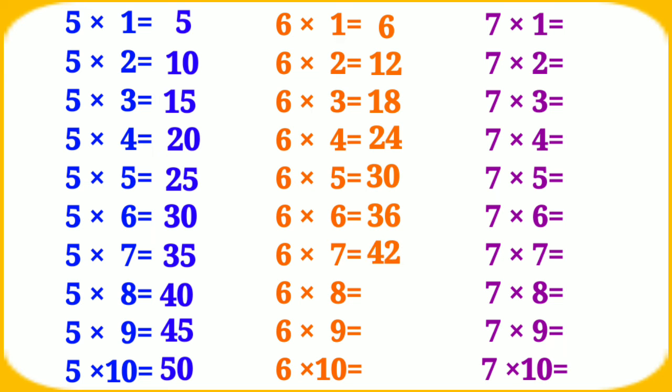6 eights are 48, 6 nines are 54, 6 tens are 60. Table of 7: 7 ones are 7.